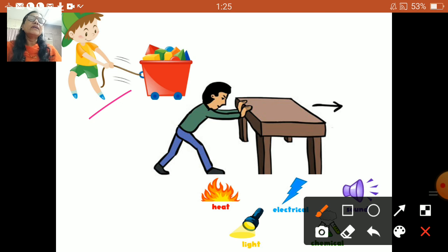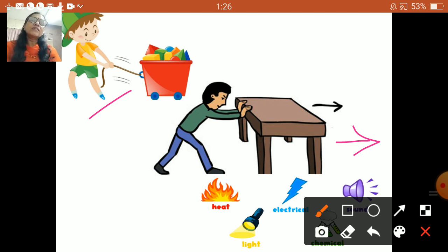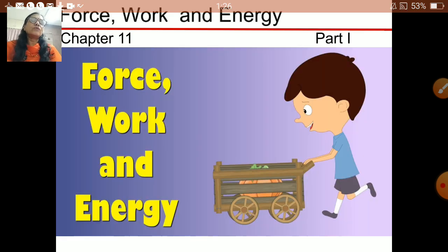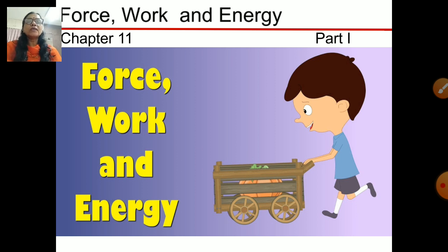Here a man is pushing a table and the table is moving in that direction. To do any work, you require energy. These are the different forms of energy. Today we are going to learn about force, work, and energy in Chapter 11.